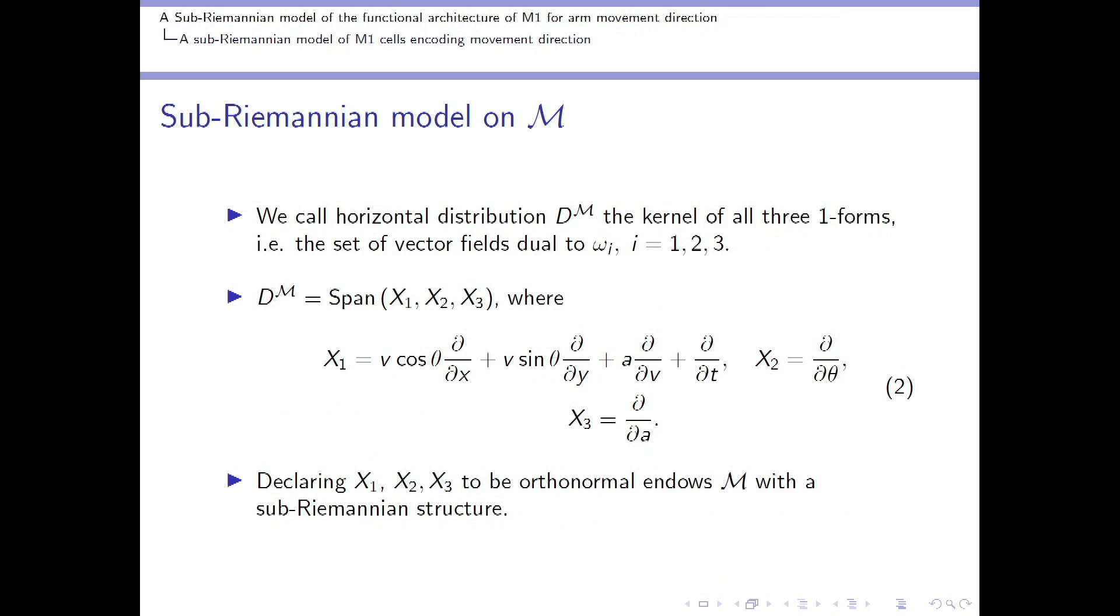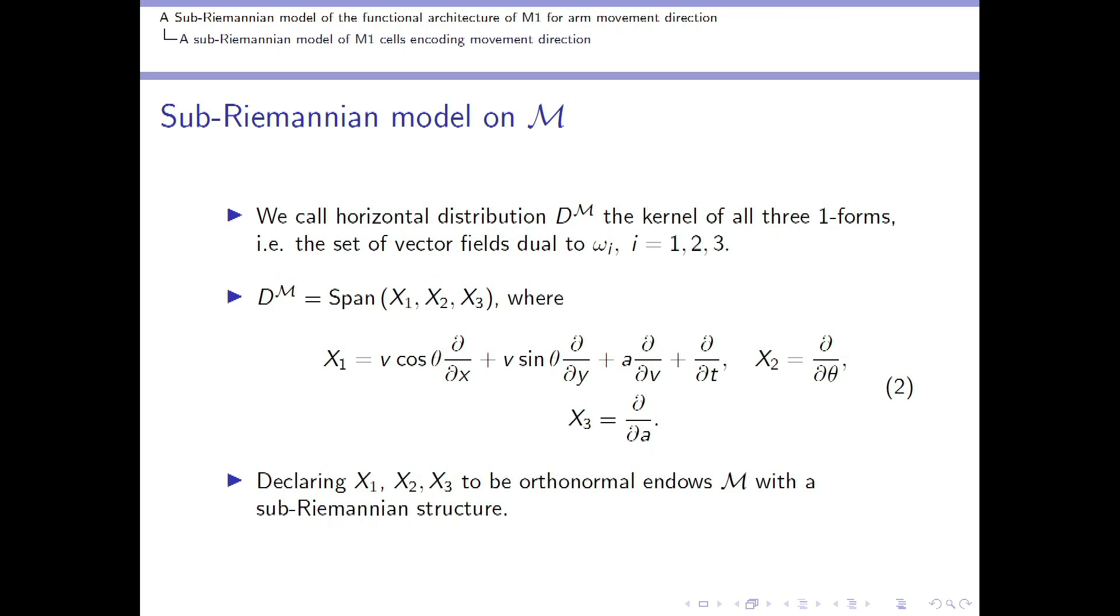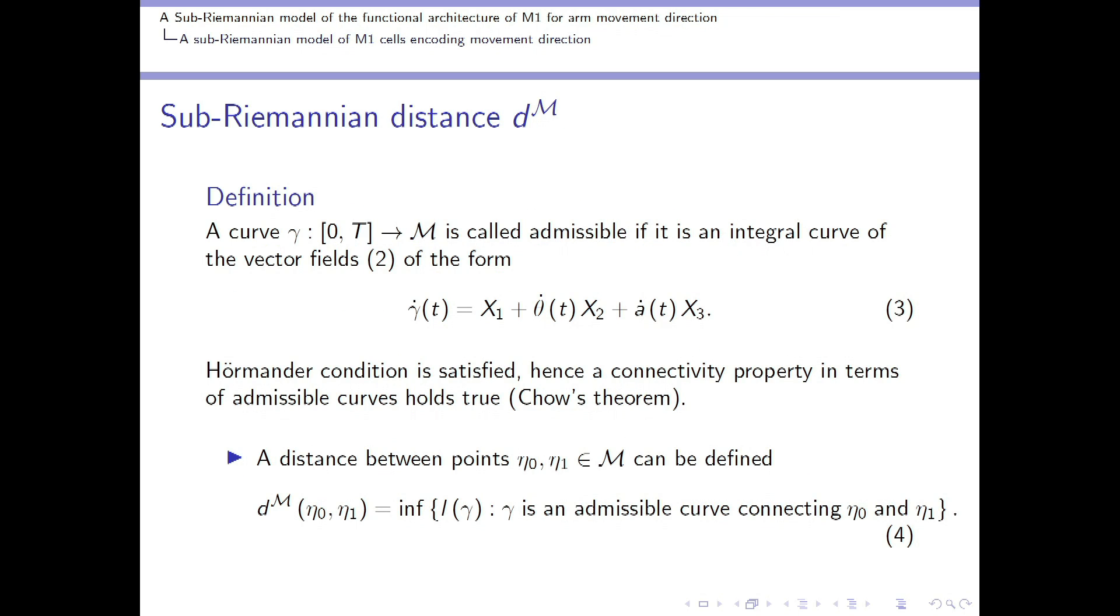But as we can see, the parameter space is of dimension 6. The horizontal distribution is spanned by only three vector fields, and hence not all curves in this space are physically meaningful. For this reason we have to introduce a notion of admissible curves in this space, as integral curves of the vector fields generator of our horizontal distribution. A fundamental property of the vector field generators is that they satisfy Hörmander's condition. And hence, a connectivity property holds true. And a distance can be defined in the whole feature space M.